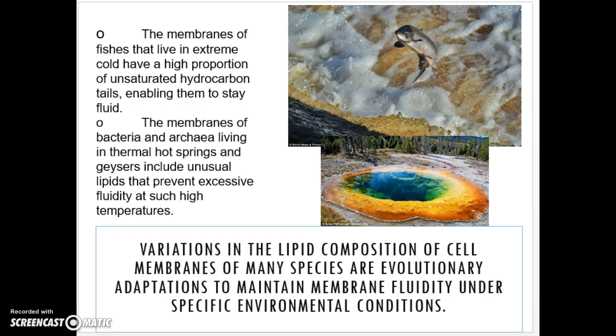Many organisms that experience different temperatures have evolved adaptations that allow them to change the lipid composition of their cell membranes. Cold-adapted organisms, like winter wheat, increase the percentage of unsaturated phospholipids in autumn to prevent membranes from solidifying during winter. Similarly, fish that live in extreme cold have a higher proportion of unsaturated hydrocarbon tails, which helps keep the fatty acids in the membrane fluid.